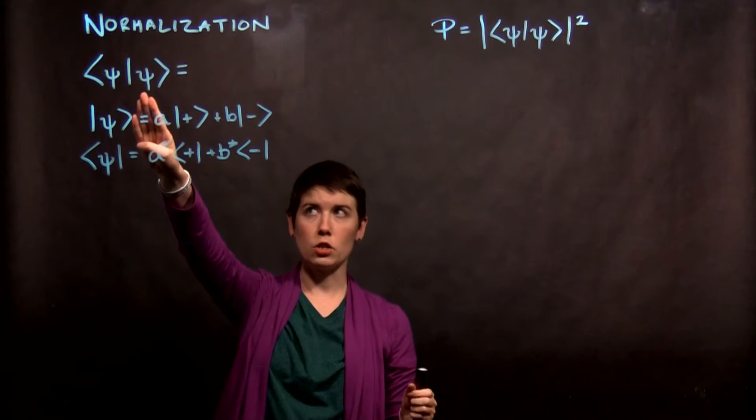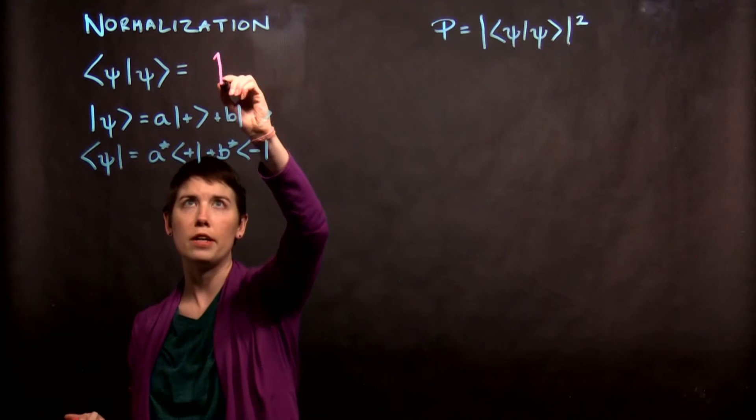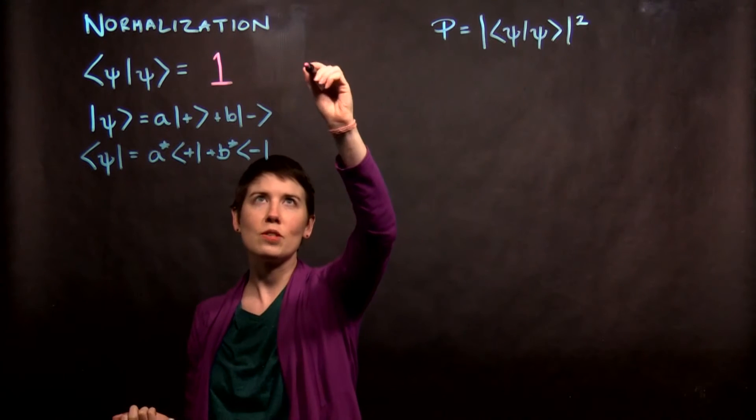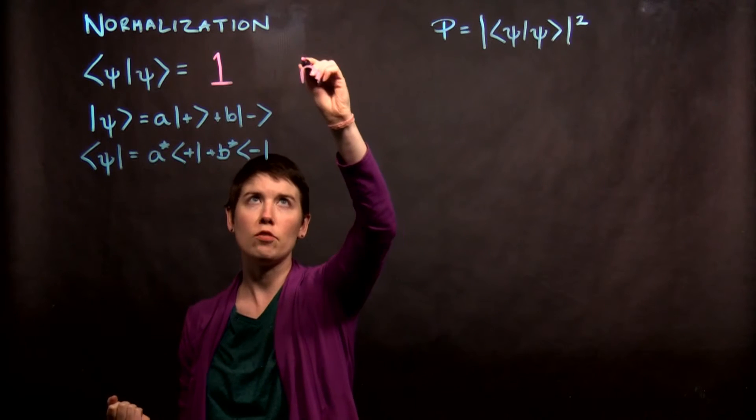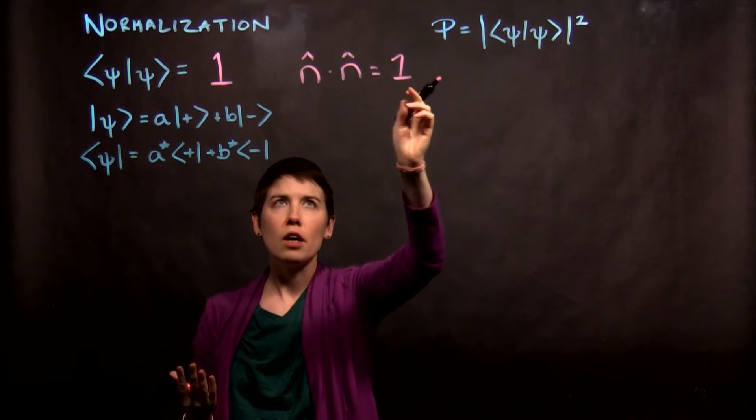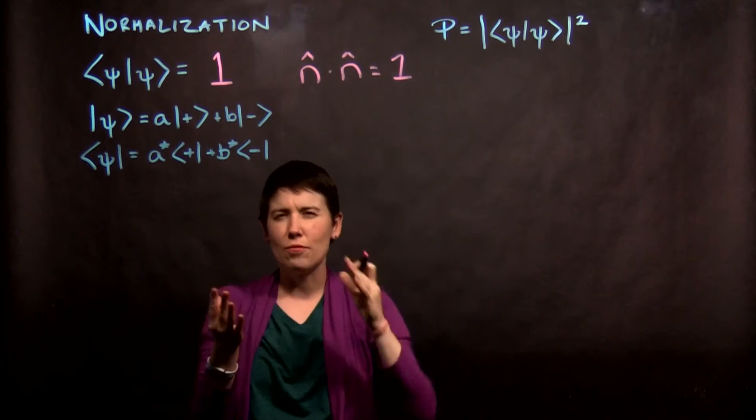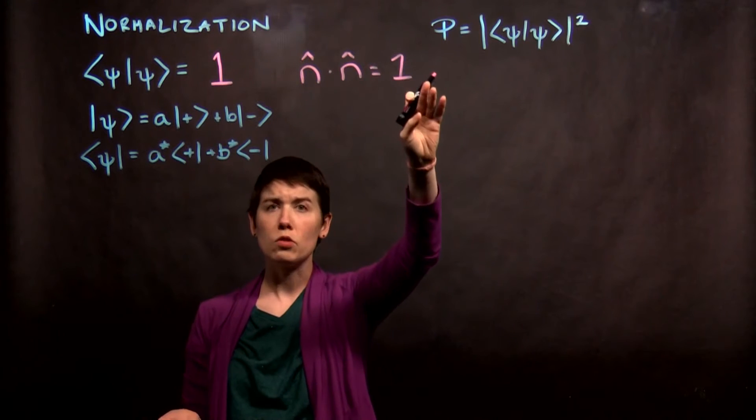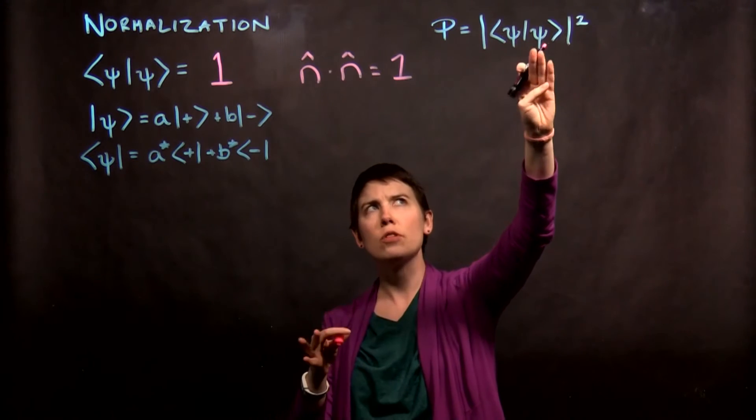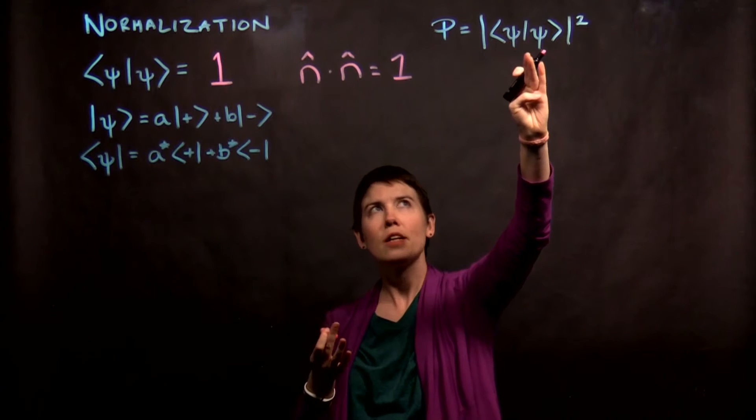So when we normalize our vector, what we're saying is we want this inner product to be equal to 1. Notice in this case it's a ket with its corresponding bra state. This is just like saying if we have some general unit vector dotted with itself, that we need that to be equal to 1. Because these in fact point in the same direction, if it's a unit vector it must have a length of 1.